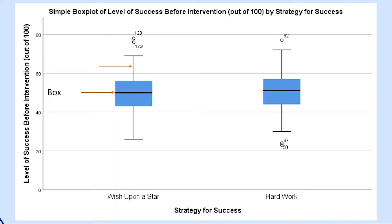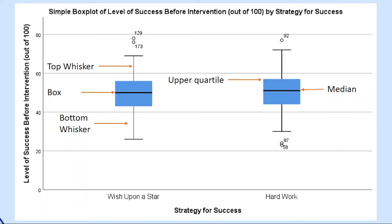The blue area is the box — that's why box plots are called box plots. On the top of the box plot we have a top whisker, and on the bottom we have a bottom whisker. On the center of the box we have a black line which represents the median. The upper edge of the box represents the upper quartile, while the lower edge represents the lower quartile.